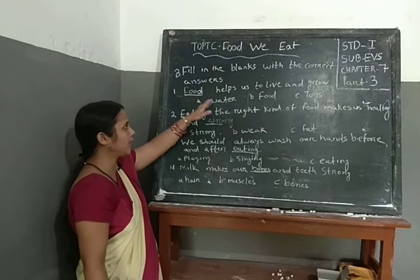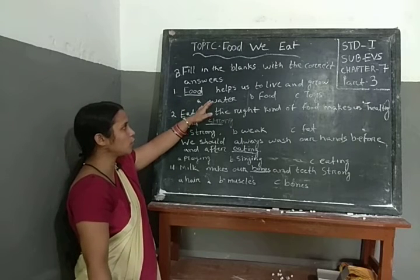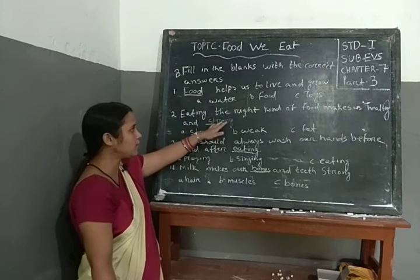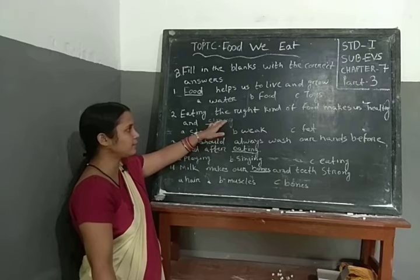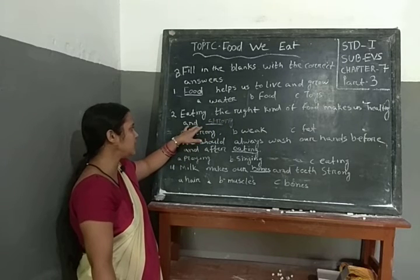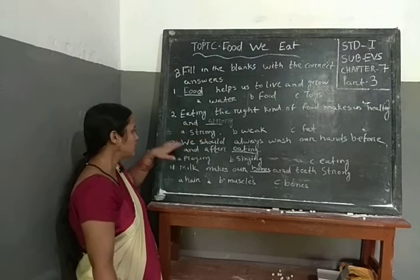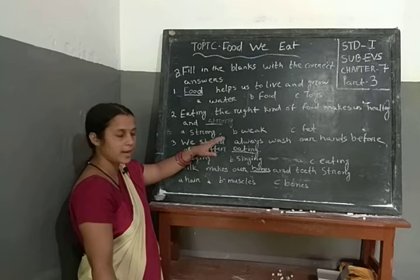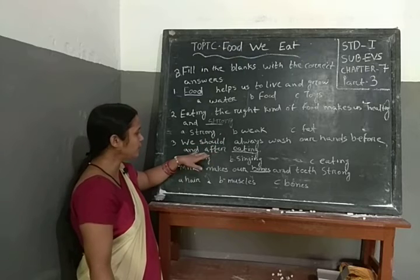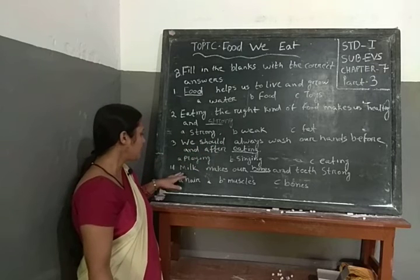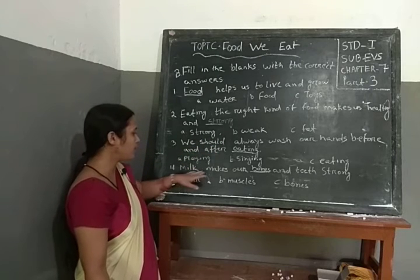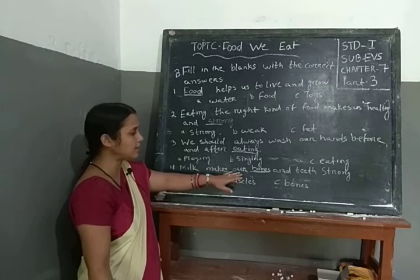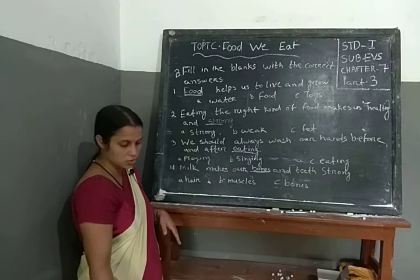Number 1: food helps us to live and grow. Number 2: eating the right kind of food makes us healthy and strong. Number 3: we should always wash our hands before and after eating. Number 4: milk makes our bones and teeth strong.